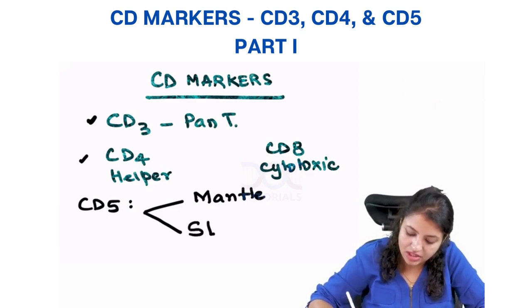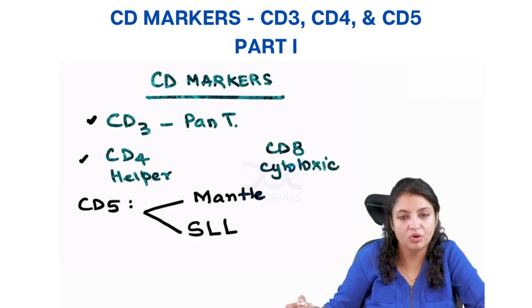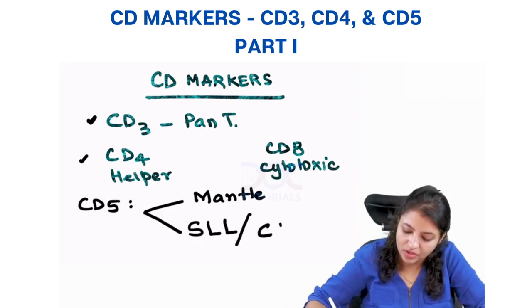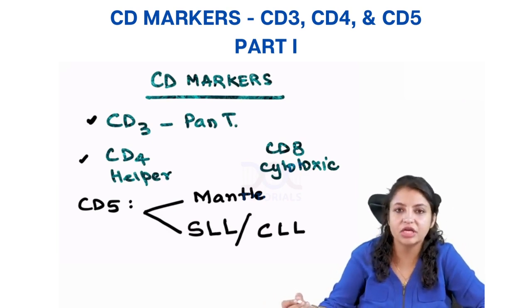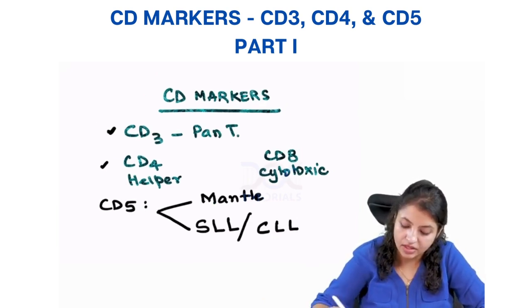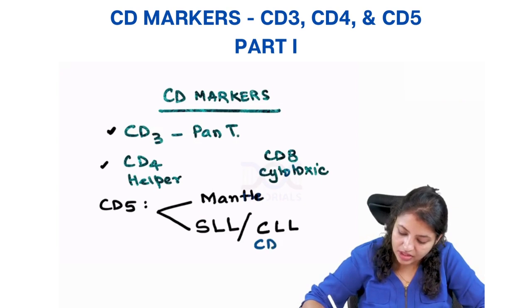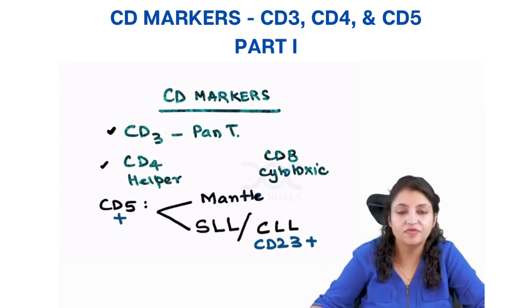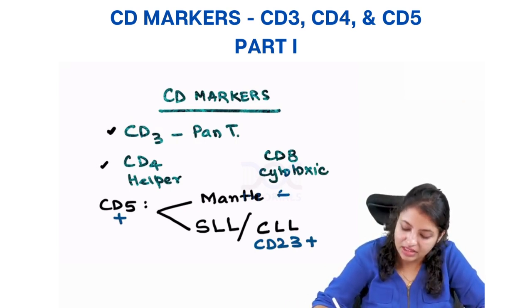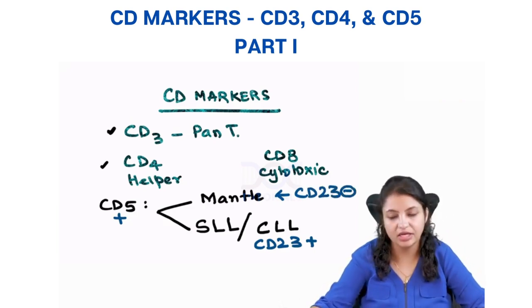Small lymphocytic lymphoma, when it involves bone marrow, is also called chronic lymphocytic leukemia. To differentiate these two, remember CD23: if CD5 and CD23 are both positive, it is CLL or SLL. In mantle cell lymphoma, CD23 is negative.